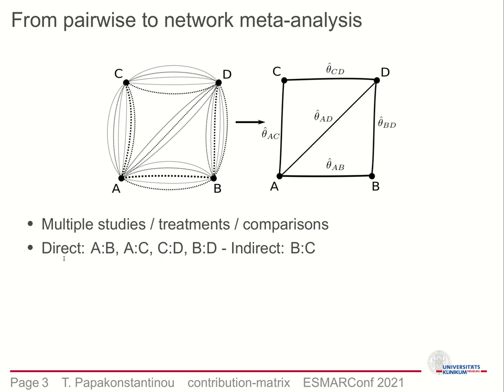In network meta-analysis we can compare more than two treatments, not only A versus B as in the previous example. This means that not only can we borrow strength from indirect comparisons,